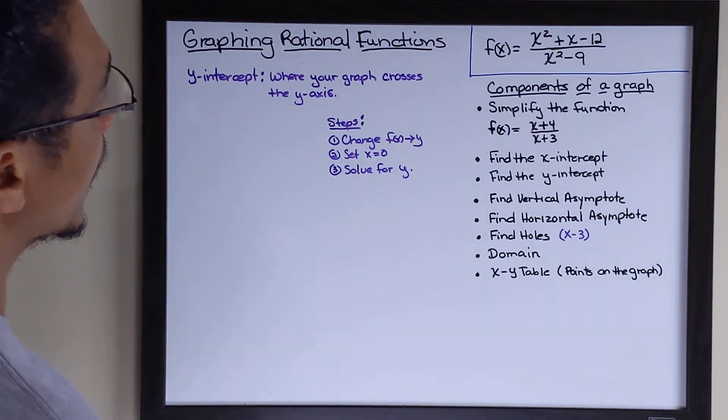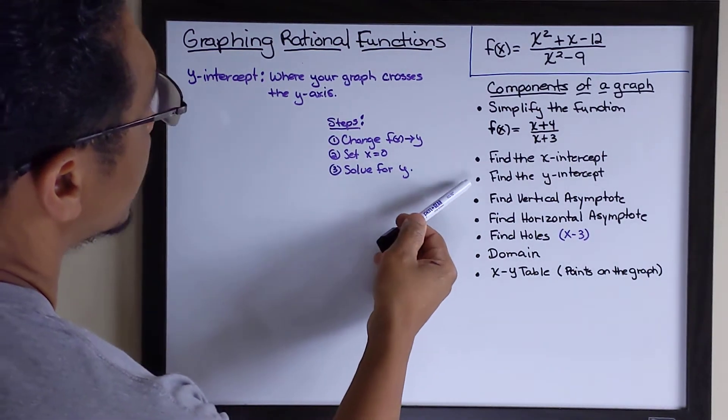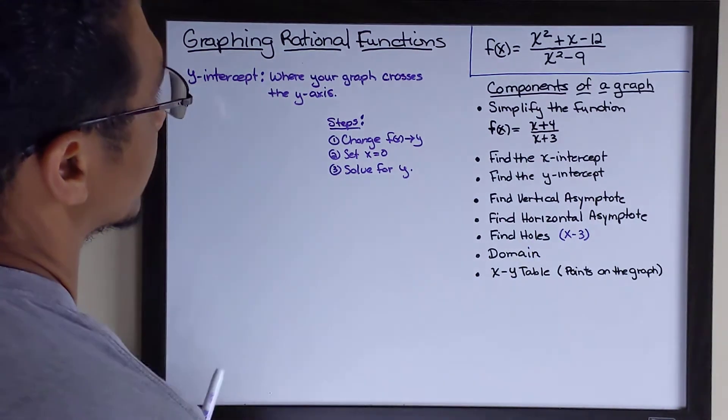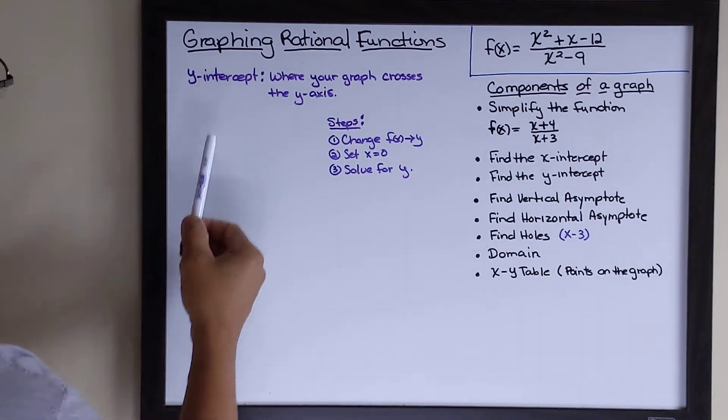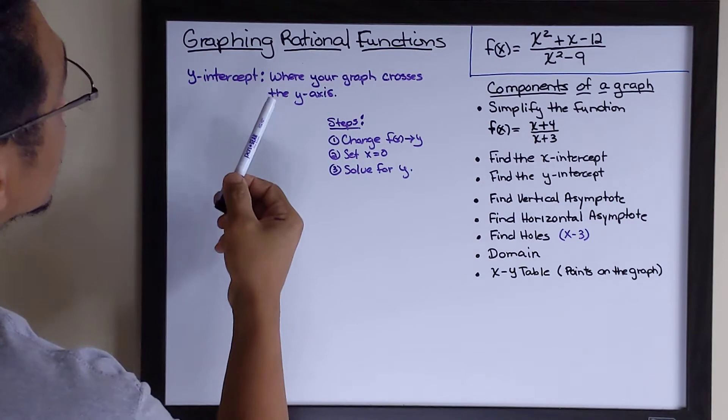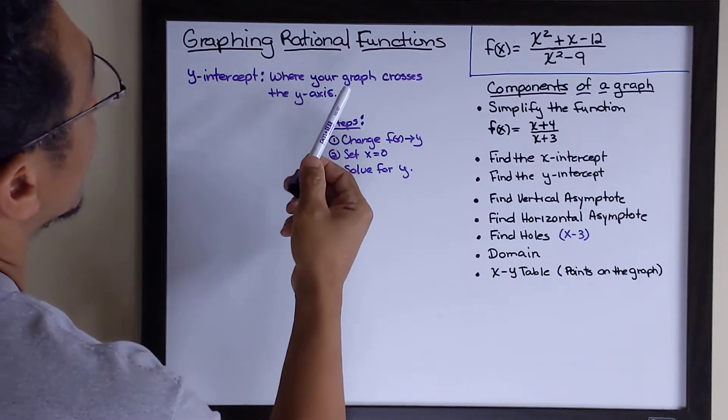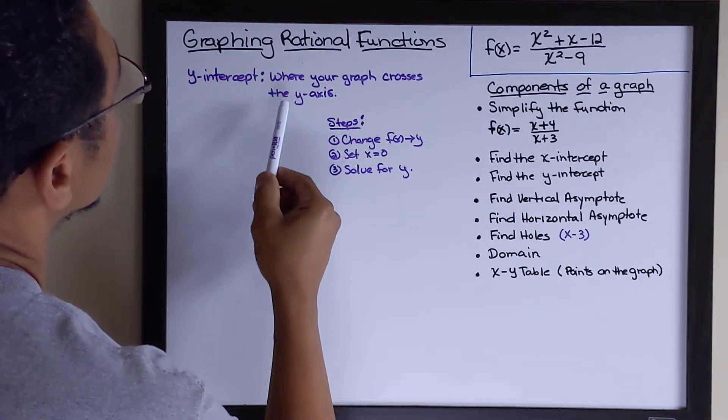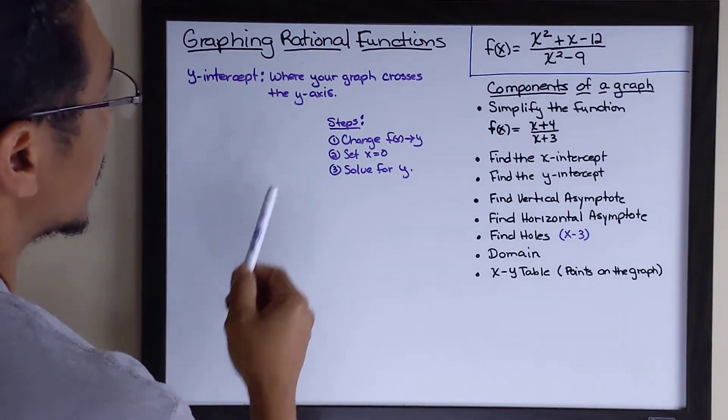In this particular graph, we're going to find the y-intercept. Now, what is the y-intercept? The y-intercept is a point or points on the graph where your graph crosses the y-axis.